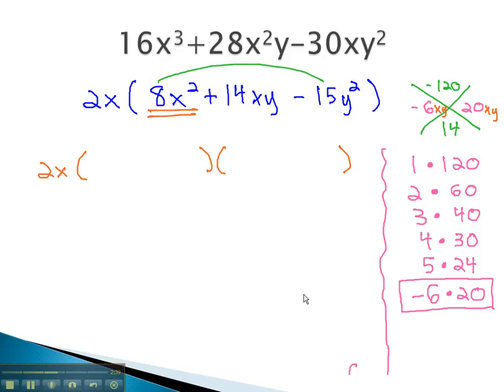First, we'll split up the 8x squared. This might be 8x times x. However, we cannot factor 8x out of either the negative 6 or the 20. So we need another pair of numbers.